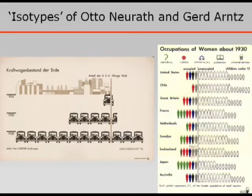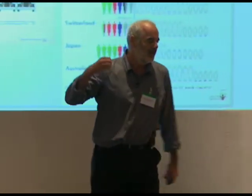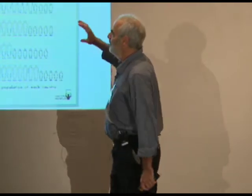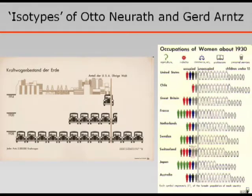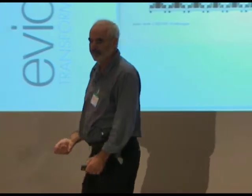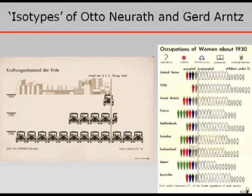I was introduced to these by Gigerenzer — the lovely work by Otto Neurath and Gerd Arntz. Pre-Second World War, Neurath was a logical positivist philosopher, part of the Vienna School, a Marxist very concerned with communicating to the masses the means of production in a clear and transparent way. They invented this idea of isotype — blocked icon arrays — you can think of them as bar charts made out of icons. For example, this showed car production in the rest of the world and the USA; this shows out of a hundred women what proportion were employed in 1930 and in what industries.